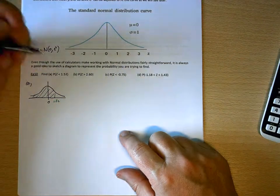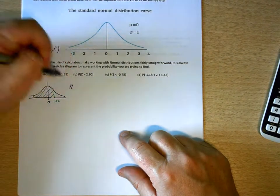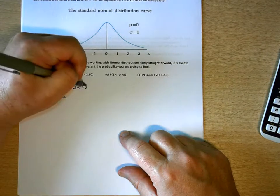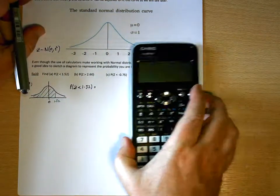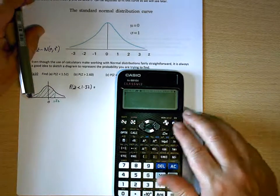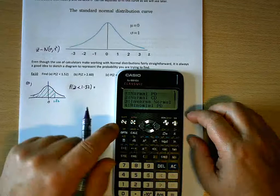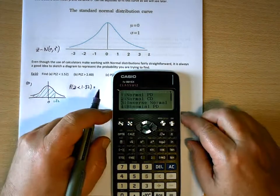So on our calculators, Z is less than 1.52. So on the calculator, you want to go to menu, 7, 2 for the normal cumulative distribution.